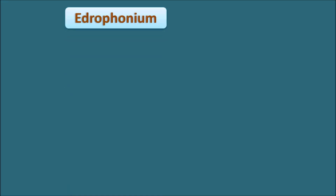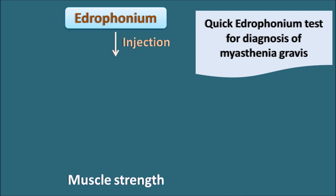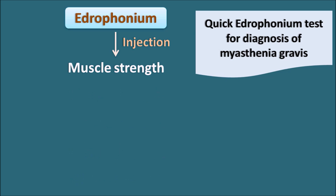The Tensilon test involves the use of Edrophonium. In this test, an Edrophonium injection is given to the patient and the muscle strength in the patient is observed.